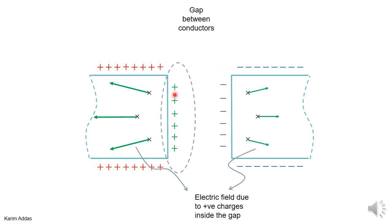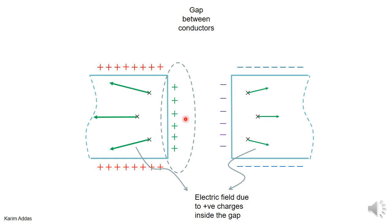The positive charges make an electric field at those representative points pointing away from the positive charge — a large value at the closer points, and a lower value at the farther points because the positive charge is farther away from those three points.